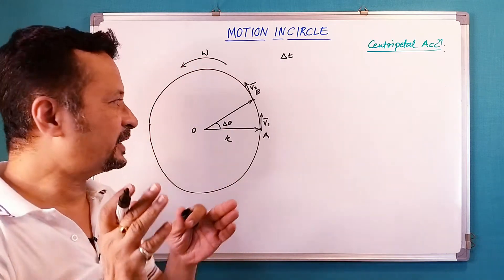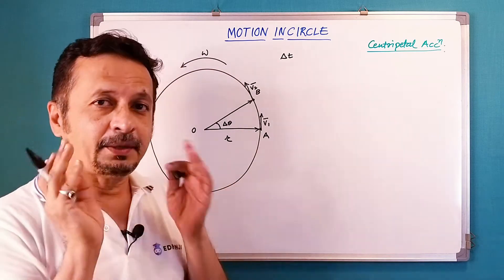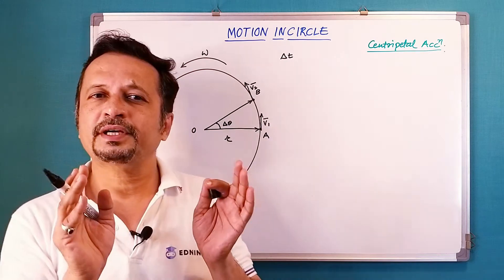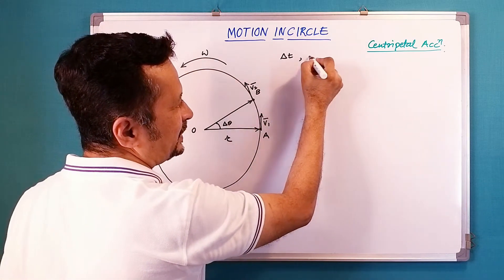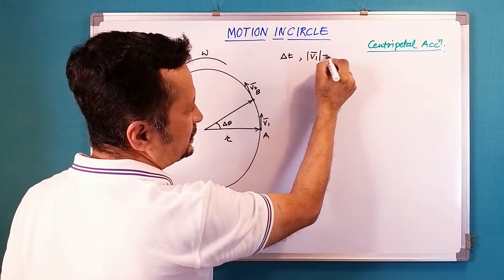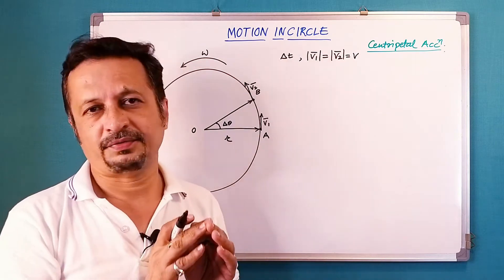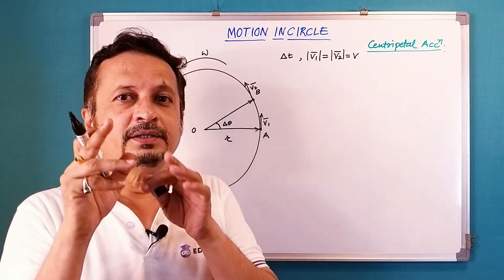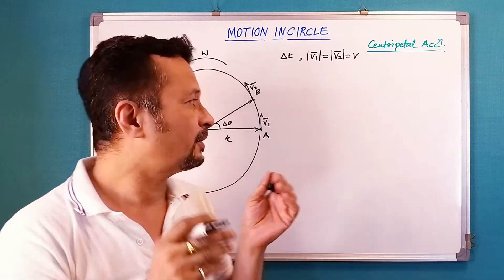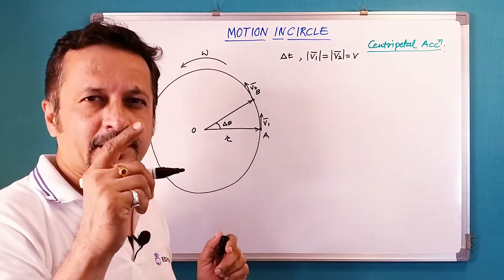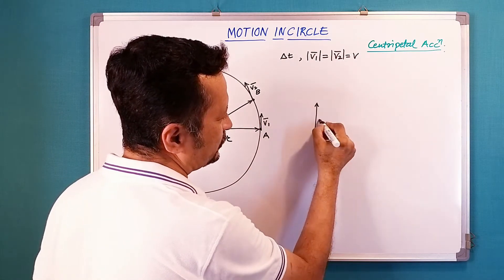As the particle moves from point A to point B, the angular displacement is delta theta, time taken is delta t, and the velocity vector changes from v1 to v2. Since it is uniform circular motion, the magnitude of v1 equals the magnitude of v2, which we call v — so linear speed is v. Now I will do a geometric construction: I draw the vector v1 as PQ.